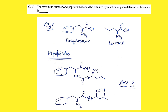The next question asks for the maximum number of dipeptides that can be obtained by reaction of phenylalanine and leucine. Couple the nitrogen of phenylalanine with the oxygen/carboxyl of leucine, and then couple the oxygen of phenylalanine with the nitrogen of leucine. A dipeptide means forming a peptide bond — CO-NH. So you can form phenylalanine-leucine and leucine-phenylalanine. The correct answer is 2, and among the given options both 2 and 4 could be listed, but the answer is 2.